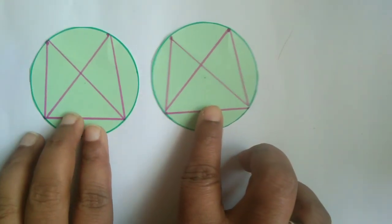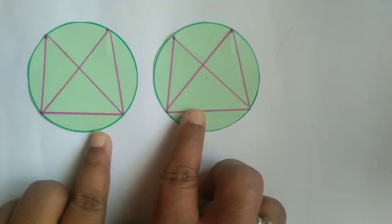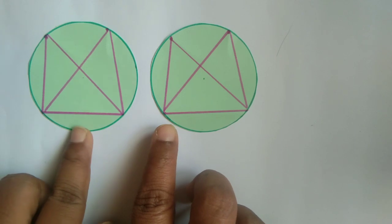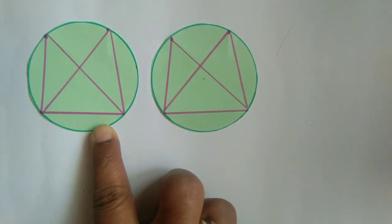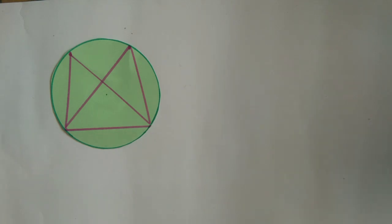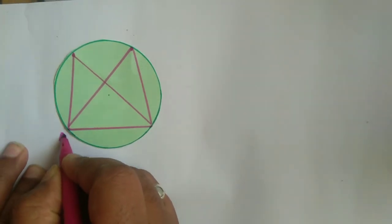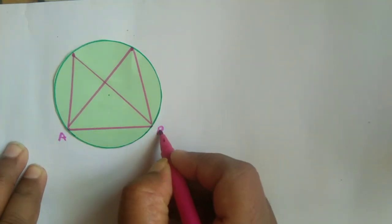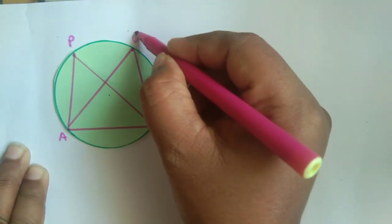Now it's ready. You can see the two circles look the same. I will paste one circle and label it. The chord will be named AB, and these two points will be P and Q.